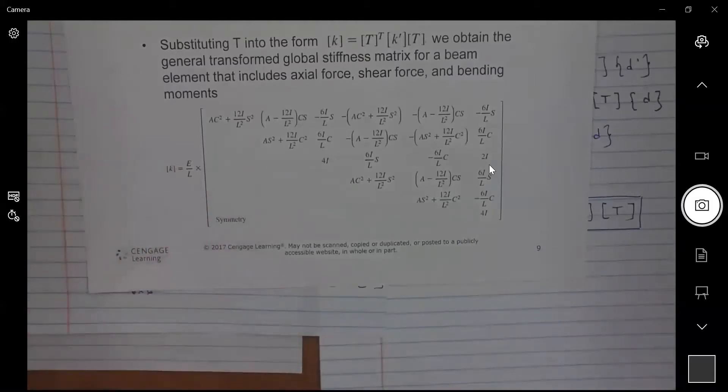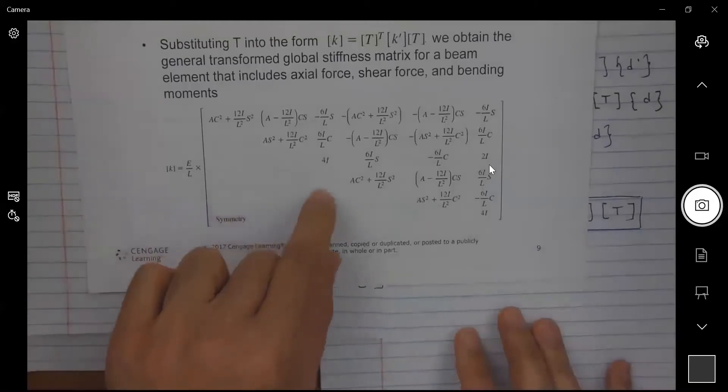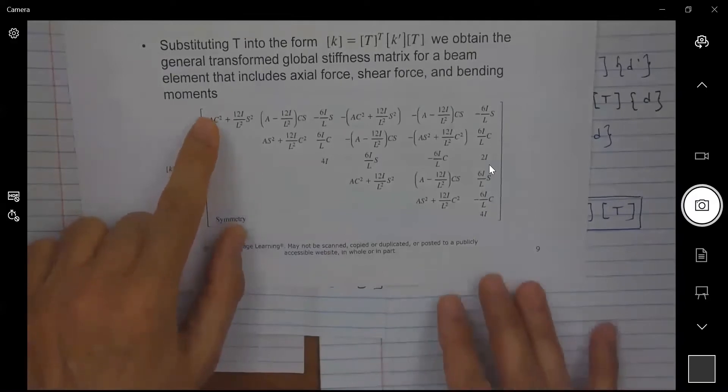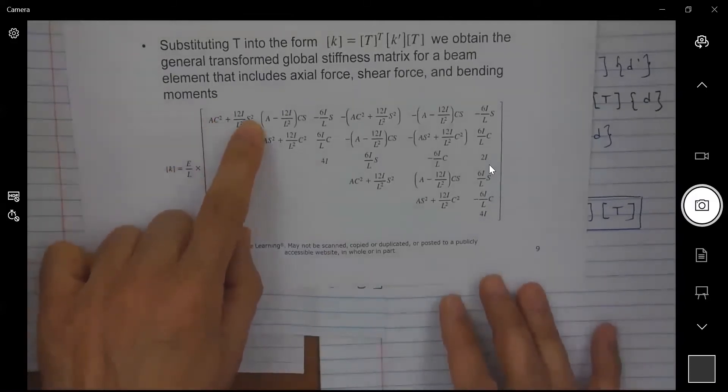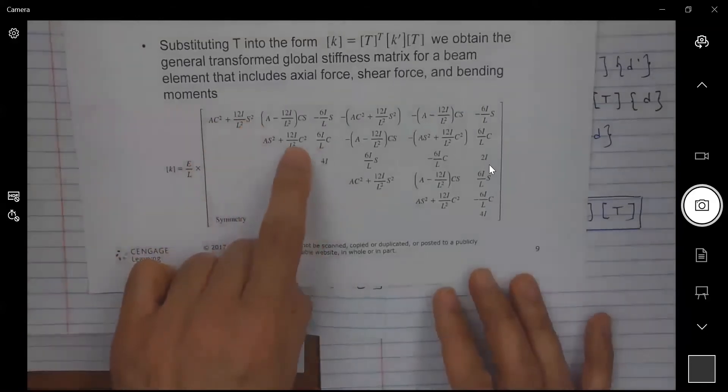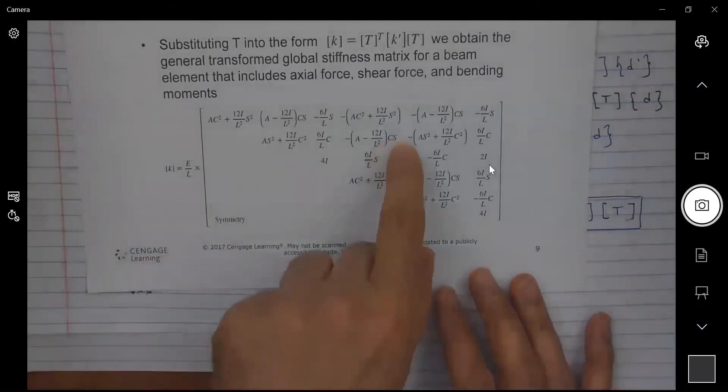And this is a six by six matrix. So if you can trust that this is the correct outcome of this operation, we can take the remaining time to try to apply this to an example. Okay, just want you to note that this stiffness matrix is dependent on the modulus of elasticity, the area A, the length L, and the moment of inertia I, as well as the sine squared, cosine squared, and sine cosine terms.